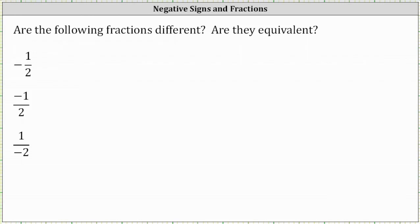Are the following fractions different? Are they equivalent? Notice how the only difference is the placement of the negative sign. For the first fraction, the negative is on the left. For the second fraction, the negative is in the numerator. And for the third fraction, the negative is in the denominator.